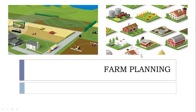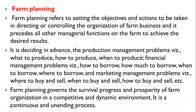What is farm planning? What does it include? What is the definition of farm planning? Farm planning refers to setting the objectives and actions to be taken in directing or controlling the organization of farm business. And it precedes all other managerial functions on the farm to achieve the desired results. So, this is very, very important in planning — we determine certain objectives or actions.